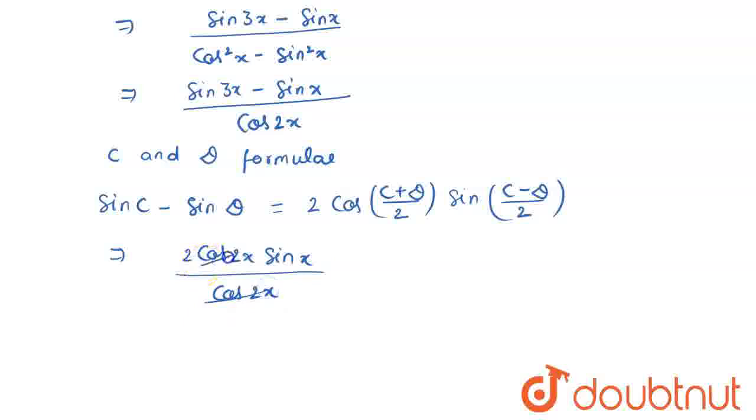Now, I cancel out the cos 2x from the numerator as well as the denominator and I get twice sin x, which is my right hand side. So, I have solved the given problem. Thank you for watching the video.